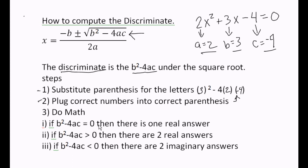Now, if b squared minus 4ac equals 0, then you have one real answer. If b squared minus 4ac is greater than 0, all numbers greater than 0 are positive. So all you have to remember is, if b squared minus 4ac is positive.